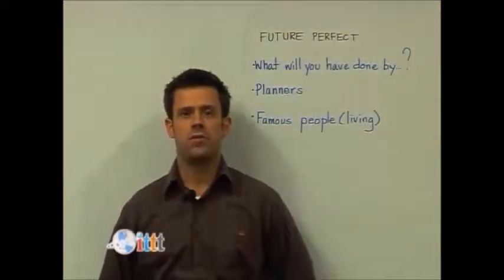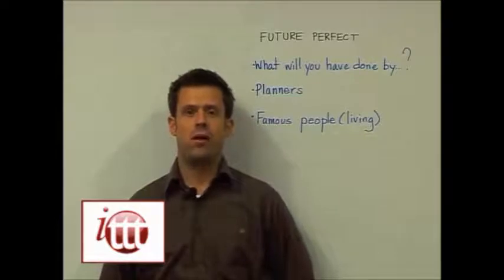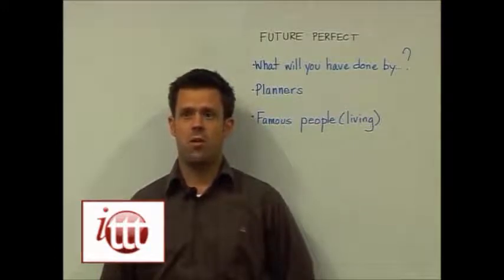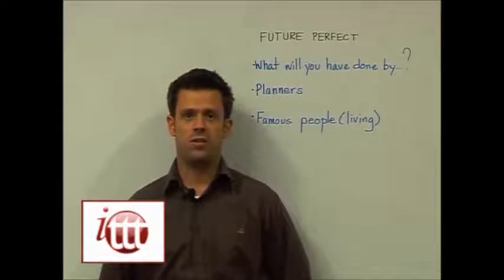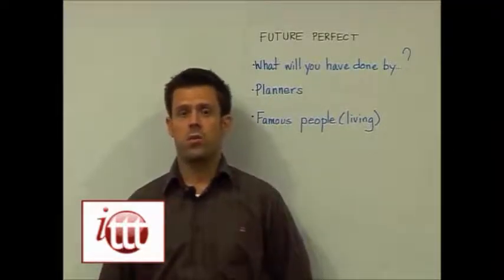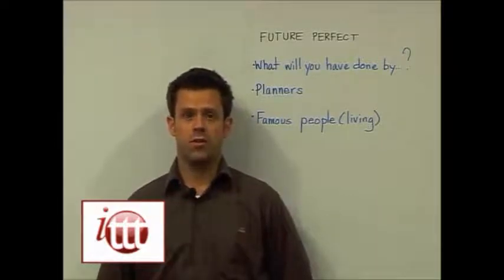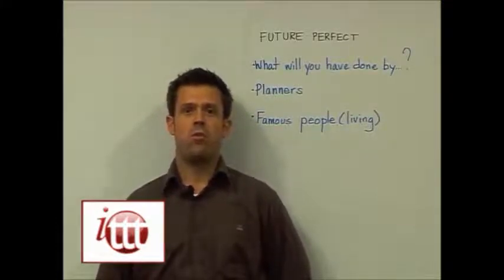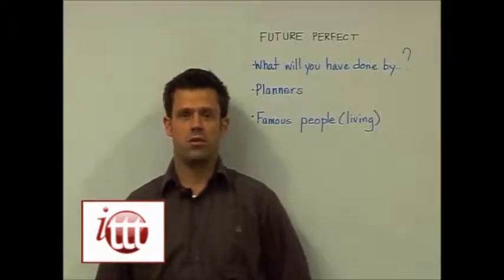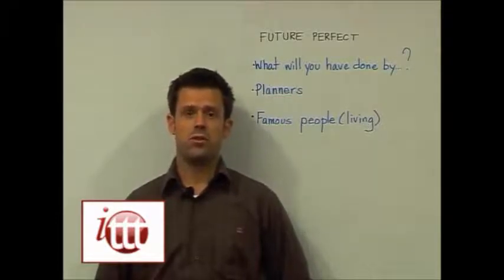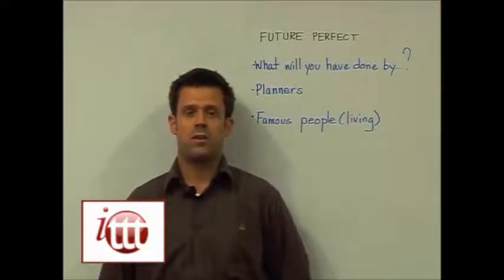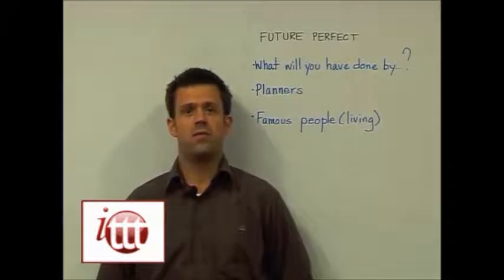Now let's look at teaching ideas for the future perfect tense. This tense talks about actions that will have happened by another point in time in the future. We could ask questions like 'what will you have done by the age of 50?' or 'what will you have accomplished by next year?' We could also use monthly calendars and ask 'what will you have done by the end of the month?' For famous people, students could ask 'how many films will he have made by the time he's 50?' or 'how many films will she have directed by the year 2025?'